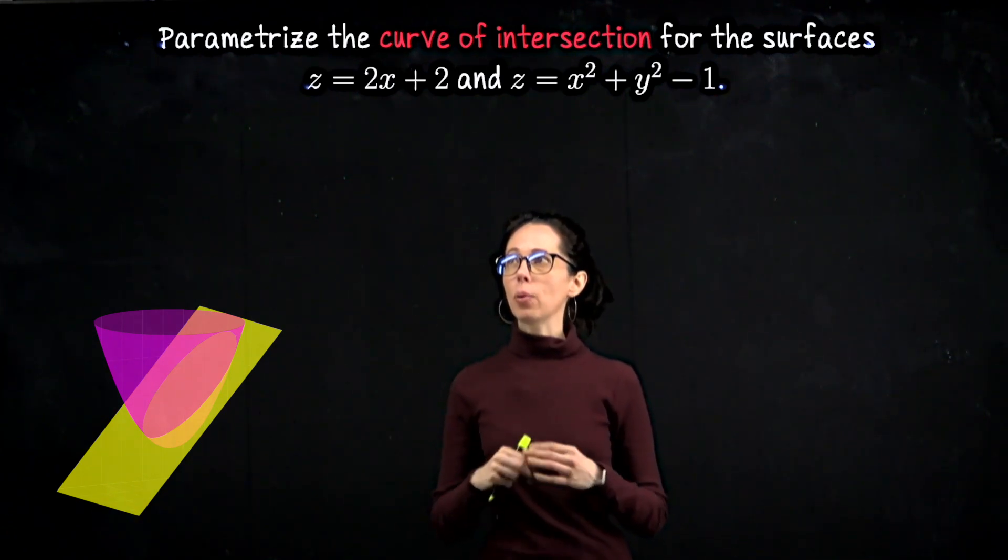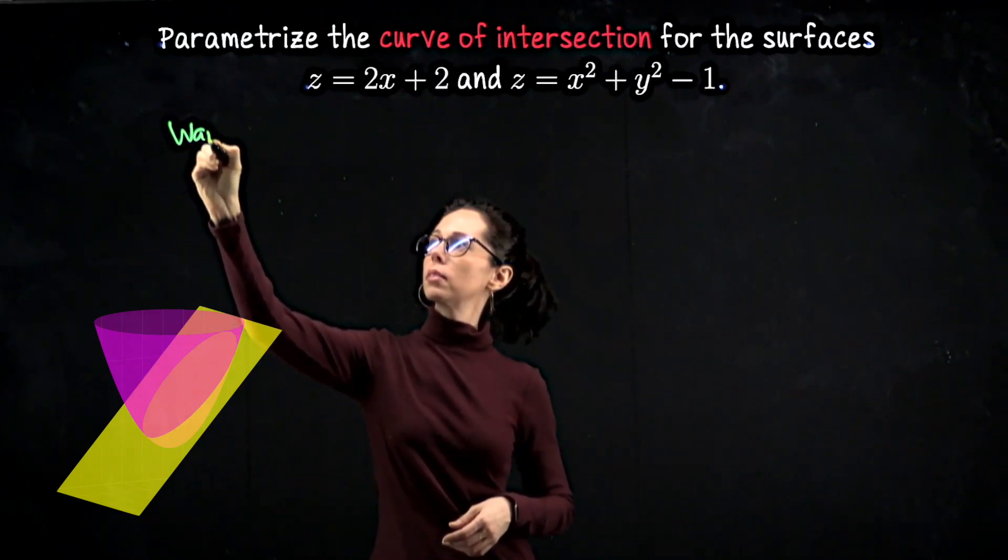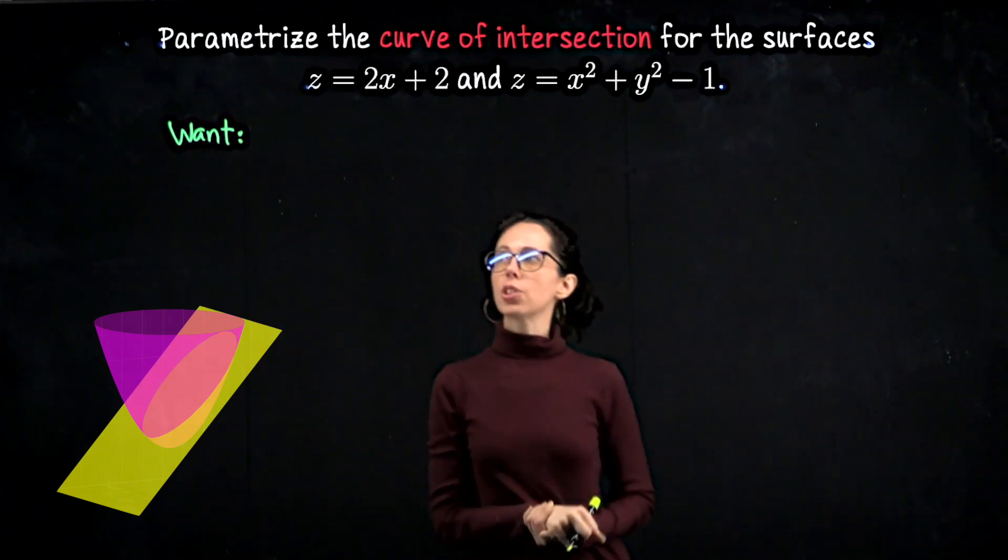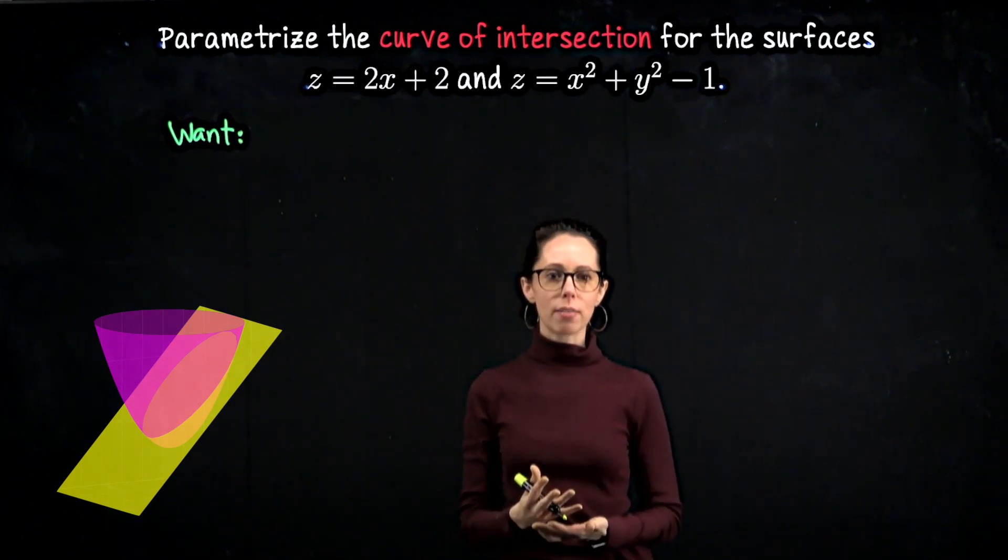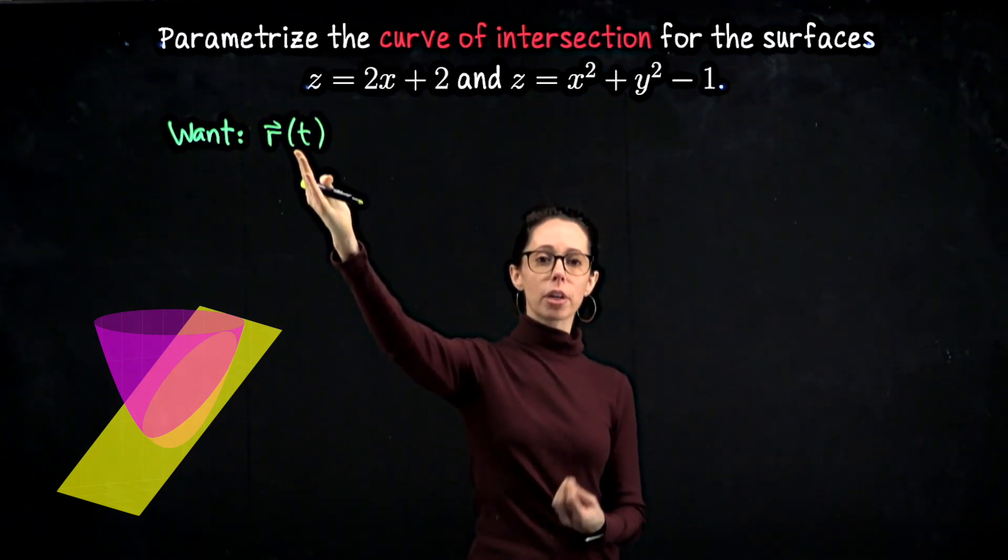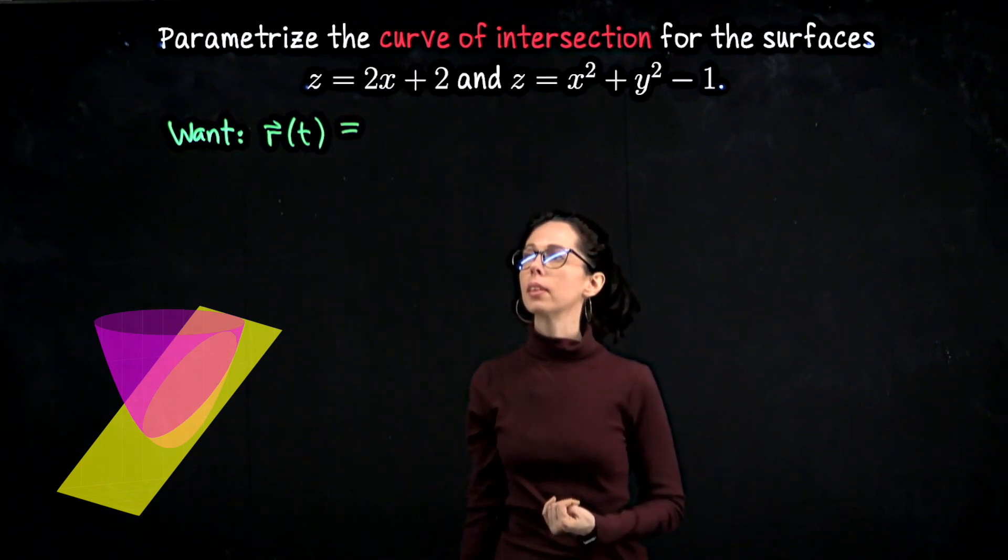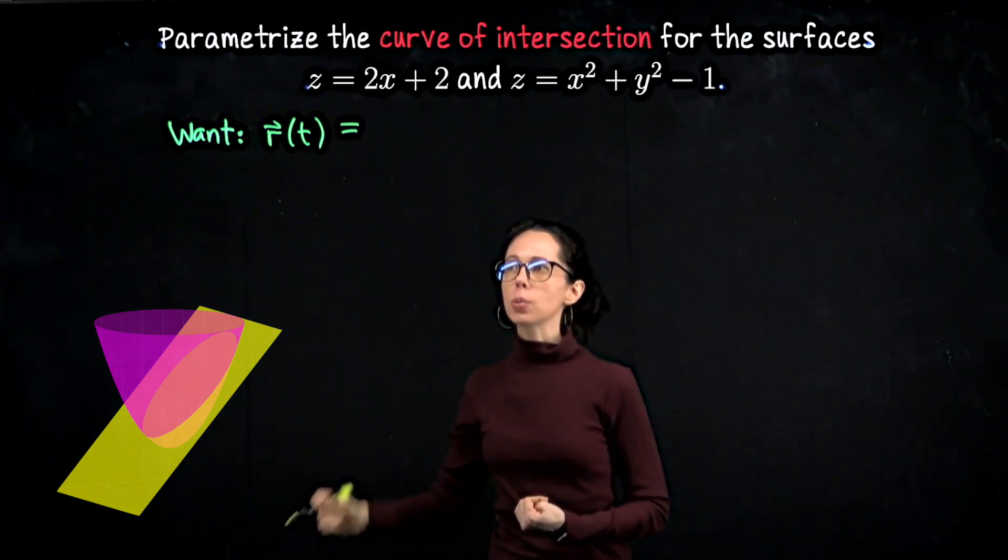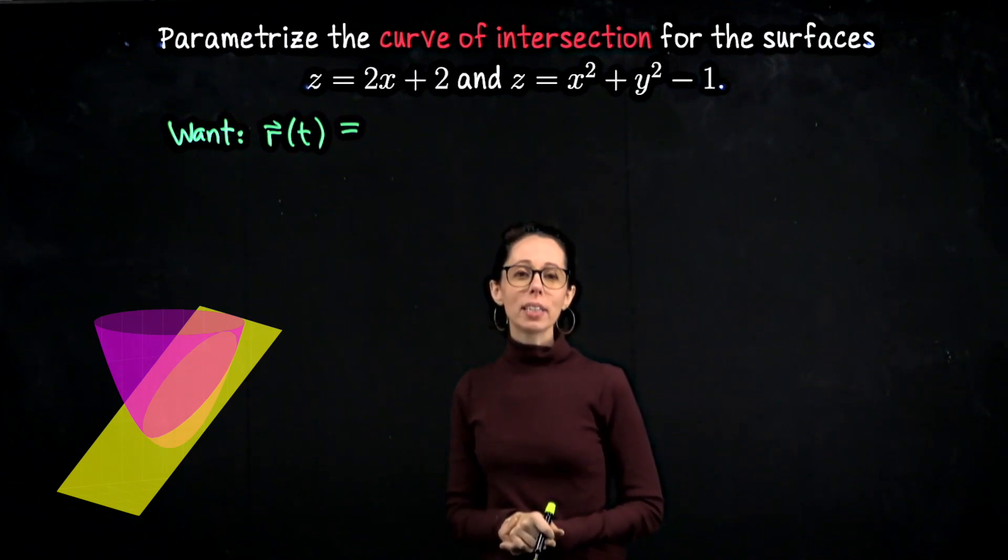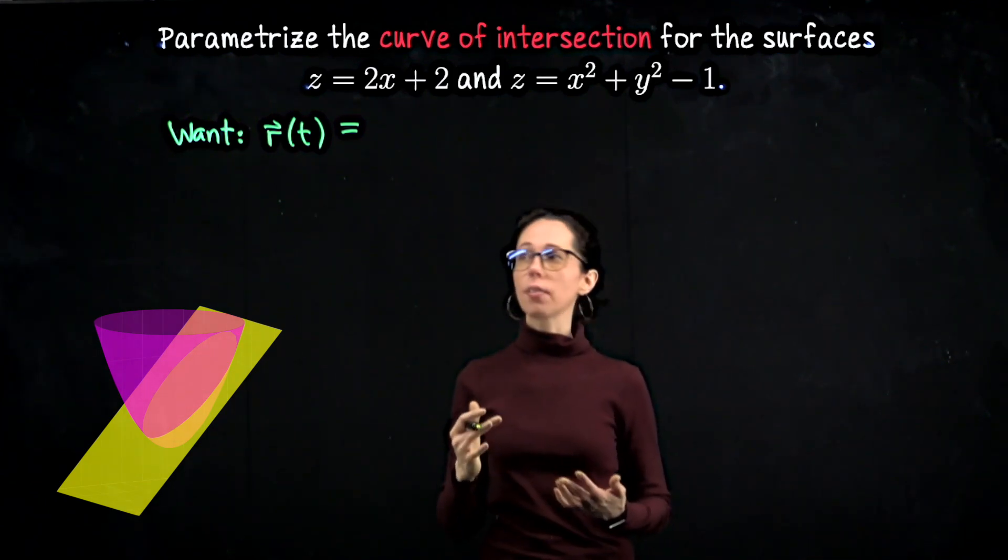Now when we see that we need to parametrize this curve, what we want, the goal, is to write down a parametric description for this curve, which is going to be a vector-valued function of the single parameter t. For a curve, it's just one parameter. What needs to happen is that as we let t go through some domain for that parameter, we need to trace out the x, y, and z coordinates for any point on this curve of intersection.